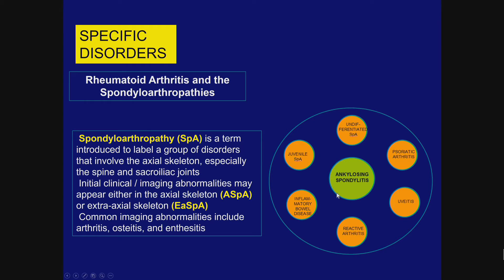In the middle of this circle is the classic disease ankylosing spondylitis, but around it you can see a whole bunch of other diseases, including psoriasis, inflammatory bowel disease, and reactive arthritis — what we used to call Reiter's syndrome. The problem with SPA is that although it has a tendency to involve the axial skeleton, the initial abnormalities may appear in the extra-axial skeleton.